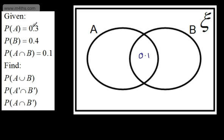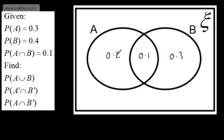If the intersection is 0.1 and the probability of A is 0.3, then the A-only section must be 0.2 — the killer mistake is to put 0.3 there. The probability of B is 0.4, so the B-only section must be 0.3. All probabilities in the sample space must equal 1. We've got a total of 0.6 inside the circles, so outside we need 0.4. We now have a complete Venn diagram.